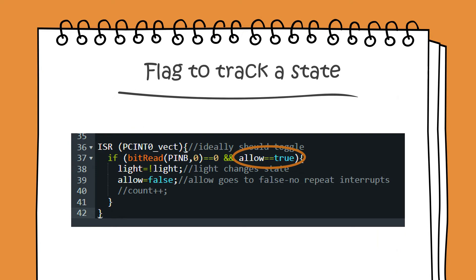Here is the example code of an interrupt vector, and you can see there are a few new terms. There is a flag called 'allow' set to true. When a switch is pressed, the voltage on the switch changes and goes to a pin on which we have enabled a pin change interrupt. When the switch returns to its original state, its value changes again. The pin change interrupt actually detects a change and does not distinguish between rising and falling edges.